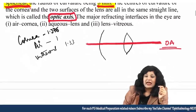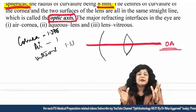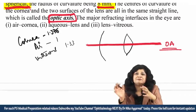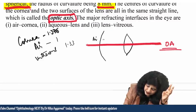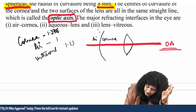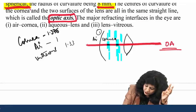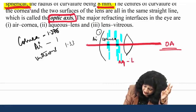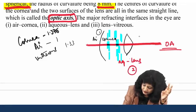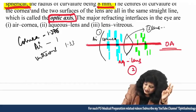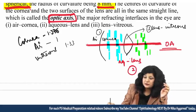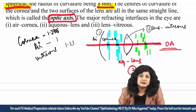When considering the eye as a refracting unit, there are three interfaces: the first is air and cornea, the second is aqueous humor and lens, and the third is lens and vitreous. These three interfaces are the important ones when considering the eye as an optical system of refraction.